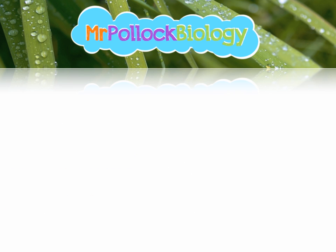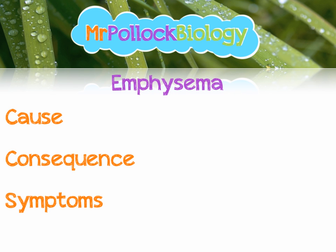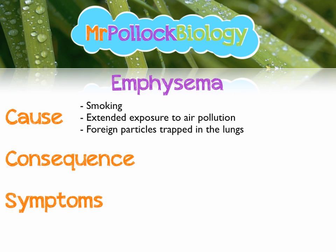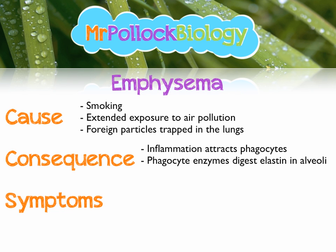The last one we're going to look at is emphysema - again, cause, consequences, and symptoms. One of the main causes is smoking, but it can also be caused by extended exposure to pollutants in the atmosphere. Basically, foreign particles get trapped in your lungs and cannot be removed. Your immune system responds by causing inflammation - a type 2 immune response - which attracts phagocytes. Those phagocytes start to produce an enzyme which digests elastic fibre or elastin, the protein found in your alveoli. That means your alveoli are not going to be able to expand as readily, and they have less surface area because the walls of the alveoli are damaged.